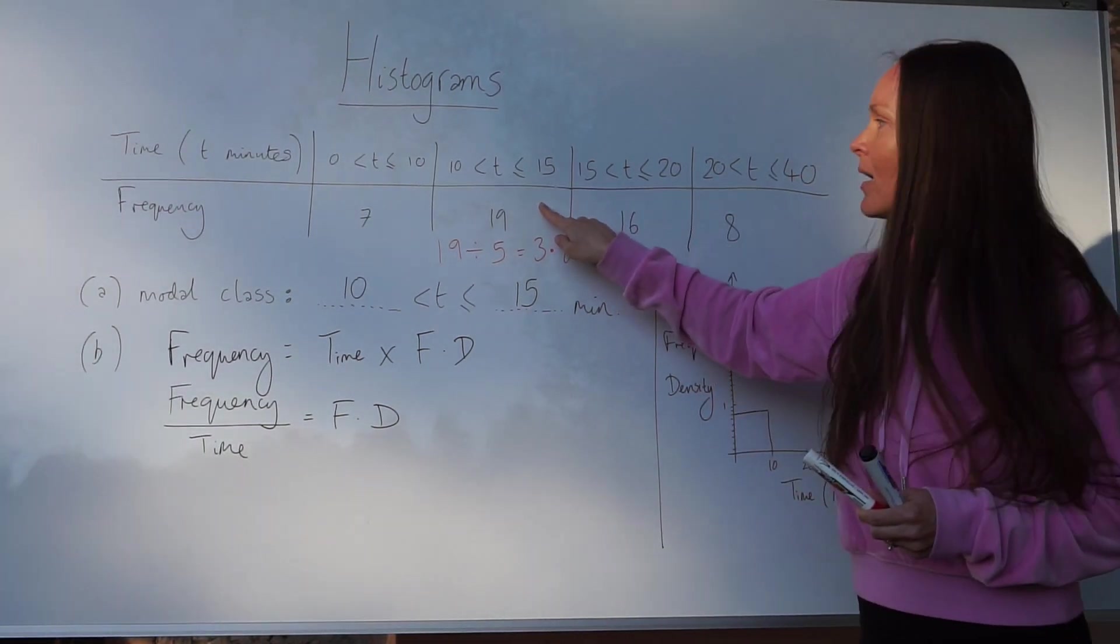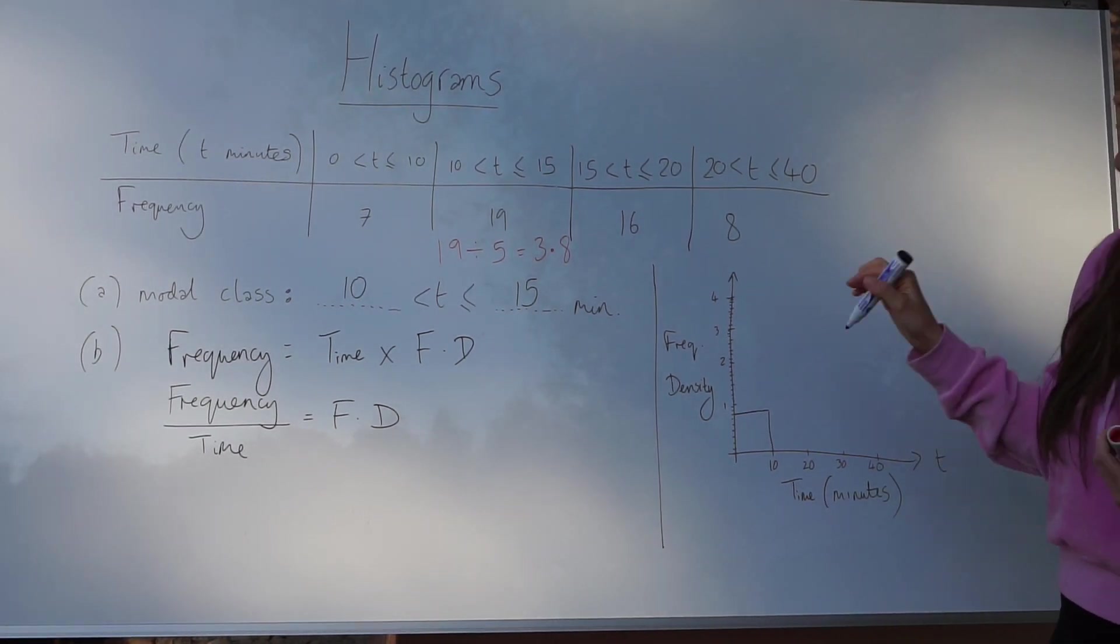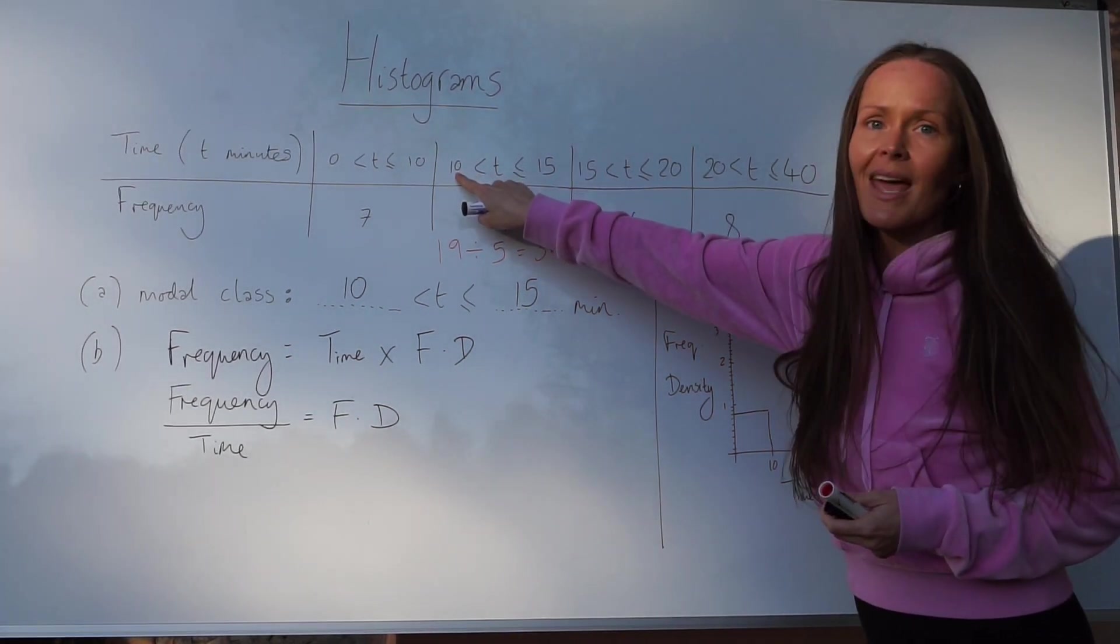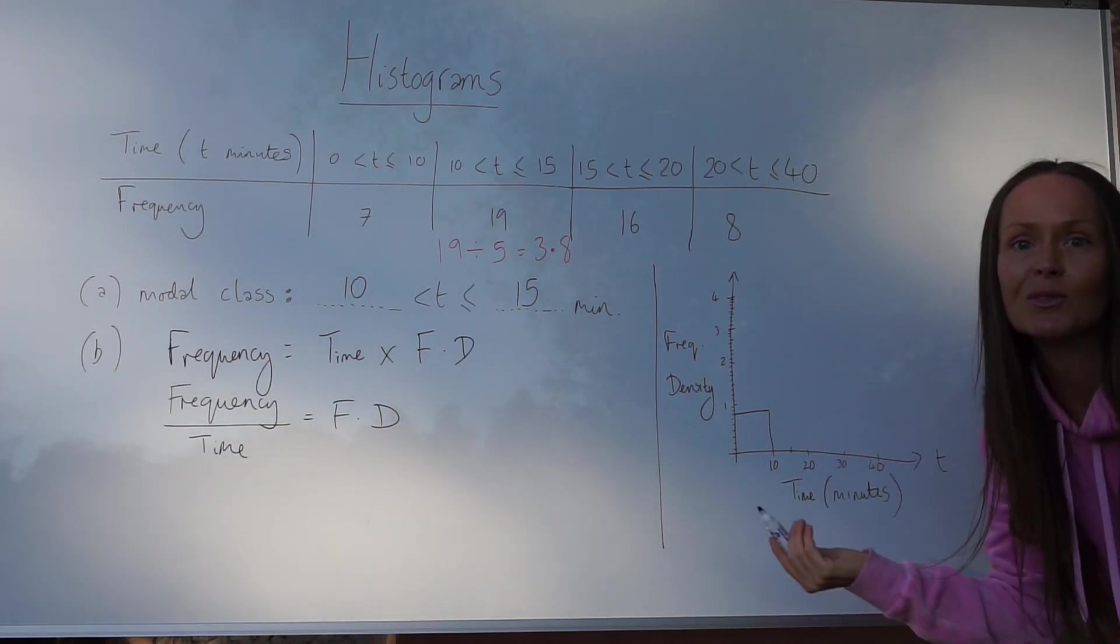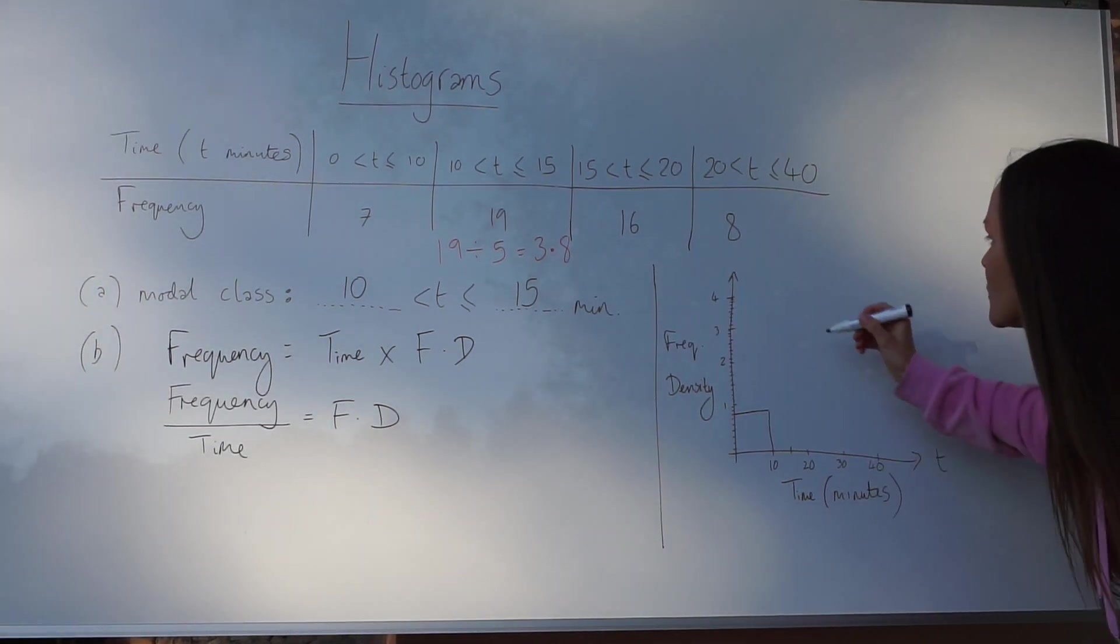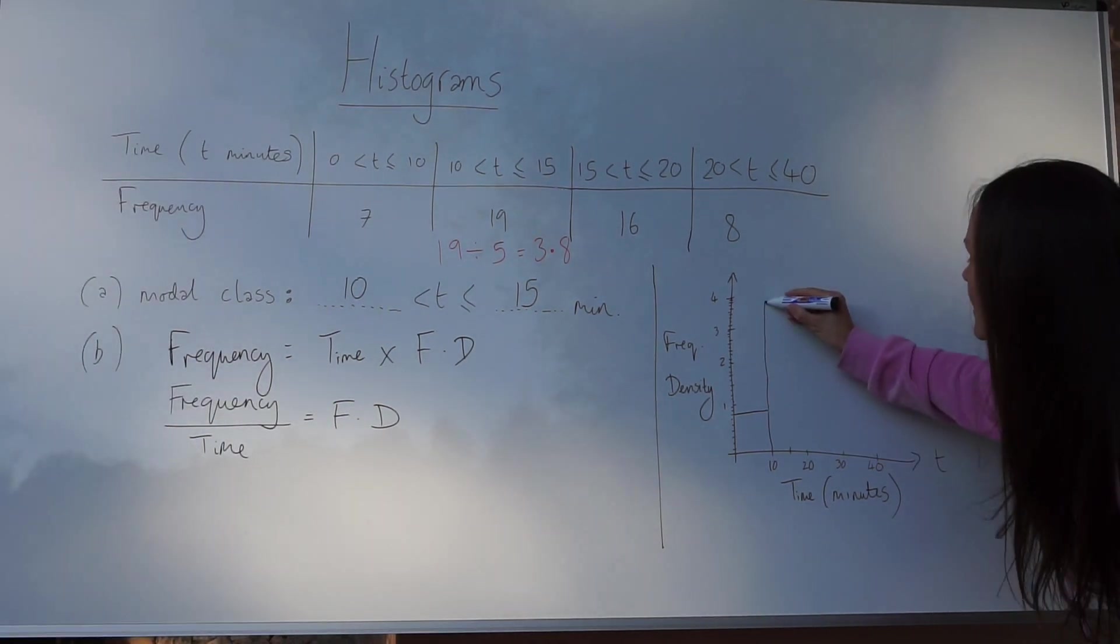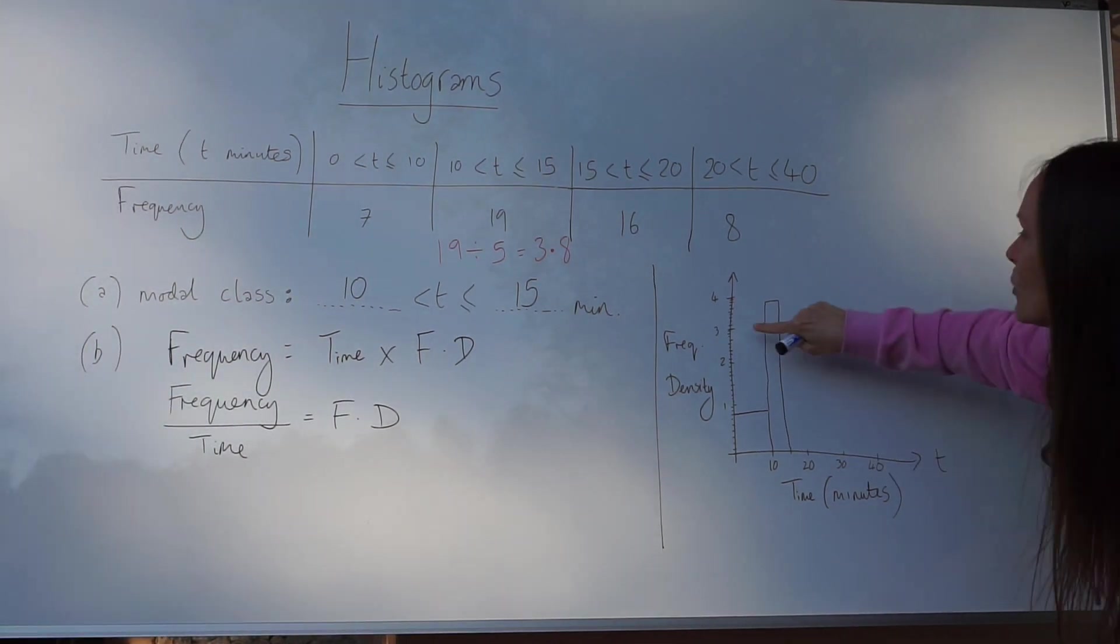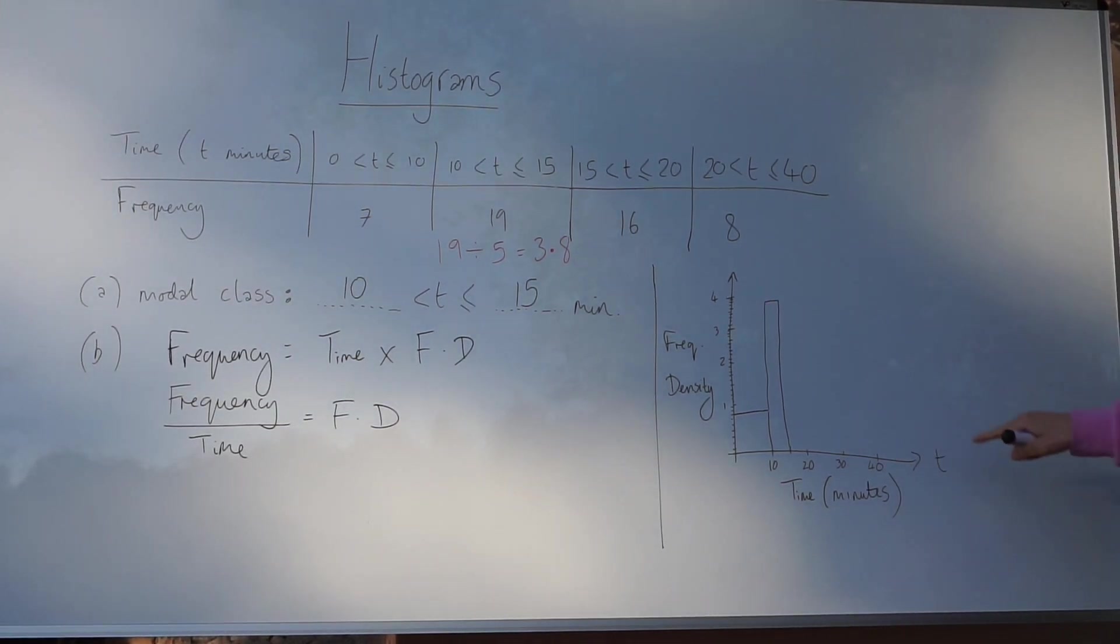That's the height of this bar, so you can draw that onto the diagram. Just be careful that you do the width correctly as well as the height. The width of this bar goes from 10 to 15. So 10 is here and 15 is obviously halfway between 10 and 20, and you need to make sure the height of the bar goes all the way up to 3.8. You'll be able to do it more accurately or see it properly on that exam question I showed you at the start of the video. So 3.8 is just 8 little squares above 3. That's the first bar.